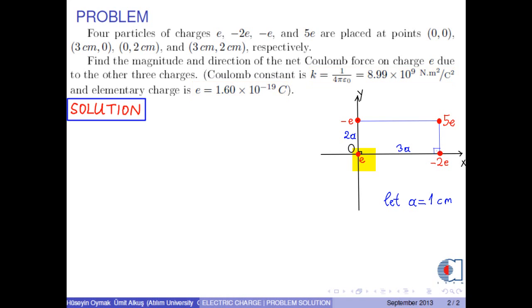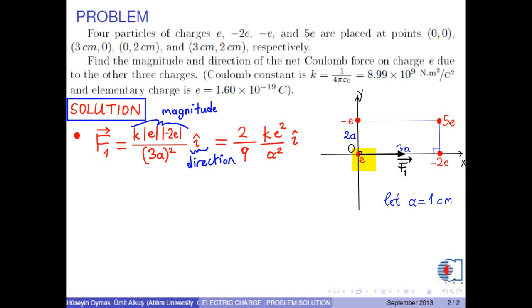Let's solve the problem. The Coulomb force due to charge negative 2E on charge E is an attractive force which is to the right. According to the Coulomb force formula, its magnitude is K times magnitude of E times magnitude of negative 2E over 3A squared, and its direction is I hat, that is, in the positive X direction. So, calculation gives 2 over 9 times K times E squared over A squared I hat.